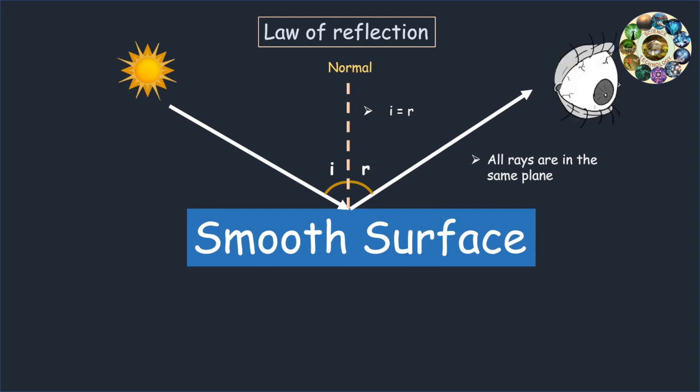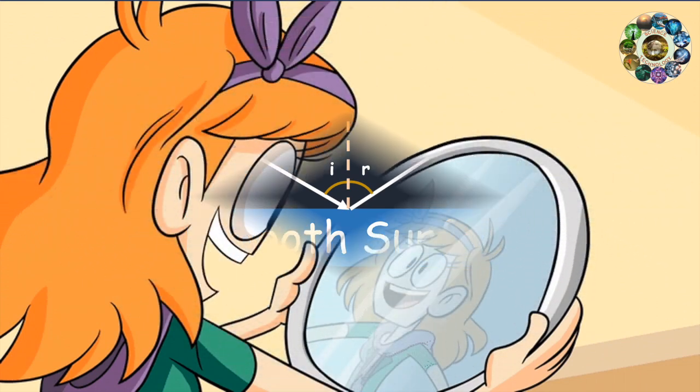There are countless examples where the law of reflection comes into play, primarily because the law of reflection works not only for visible light, but other electromagnetic radiation as well. However, the one example that we come across almost every day is related to the mirrors we have in our homes.